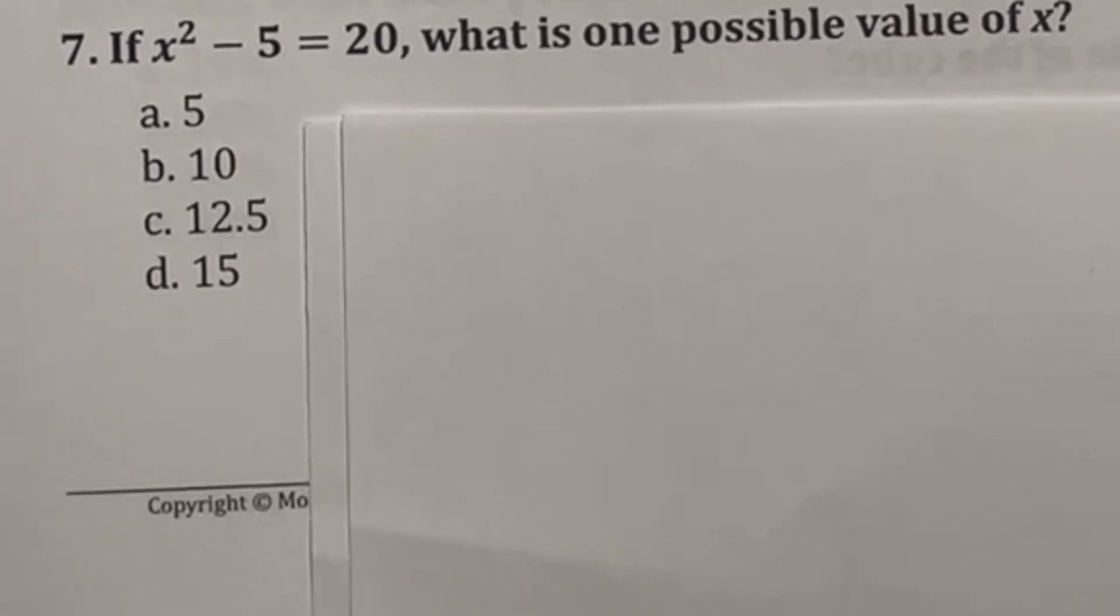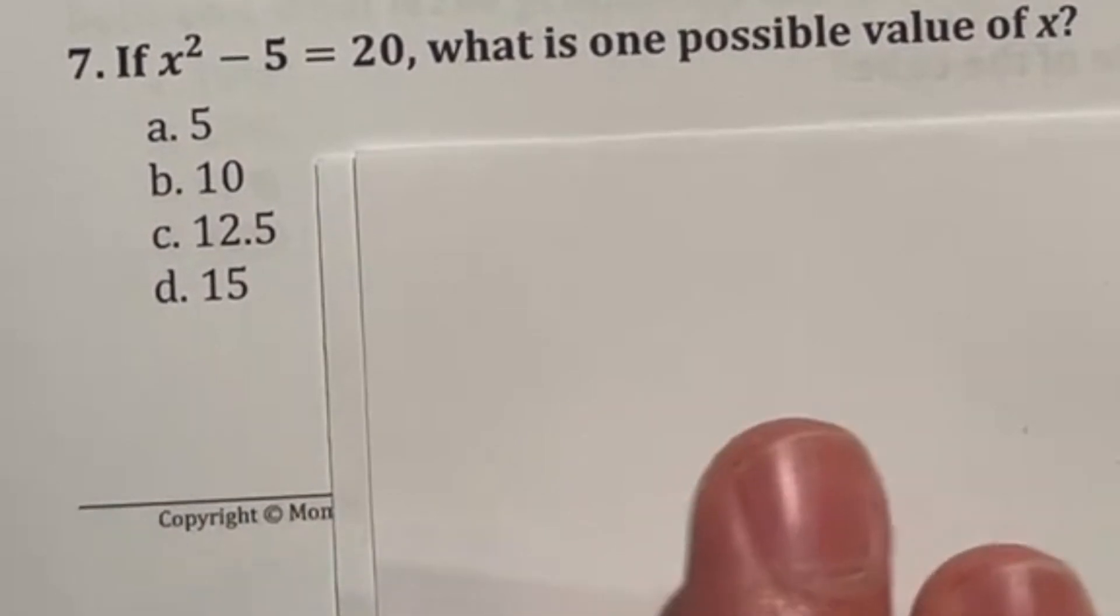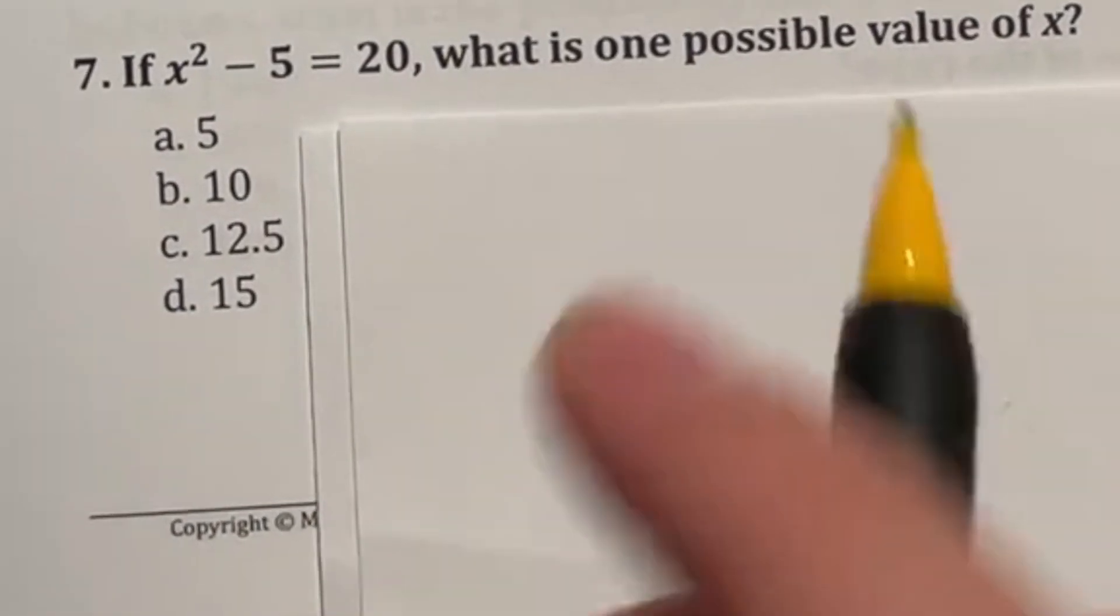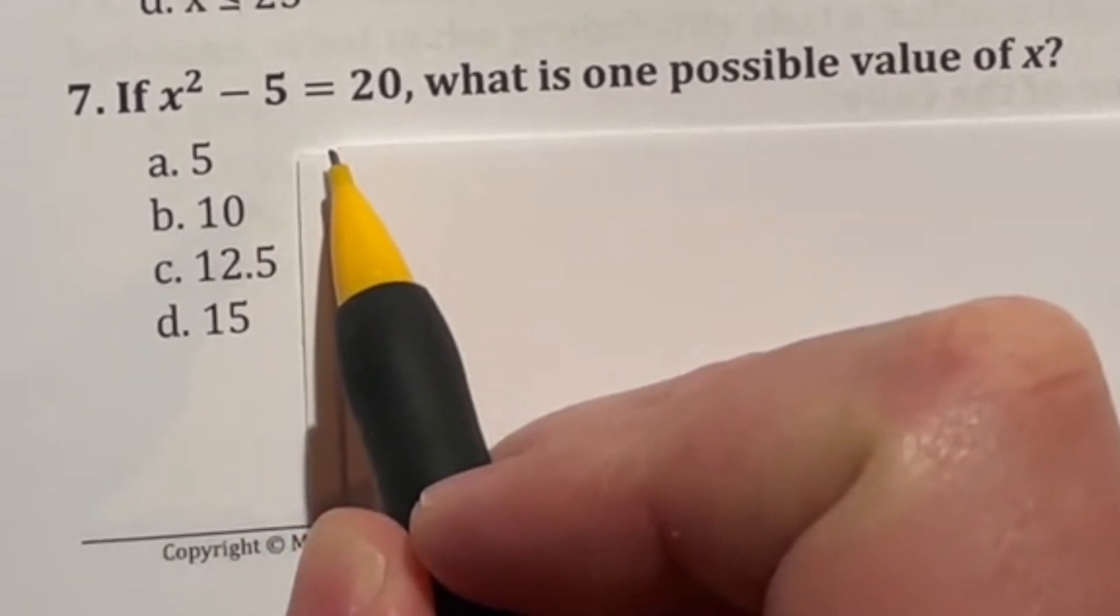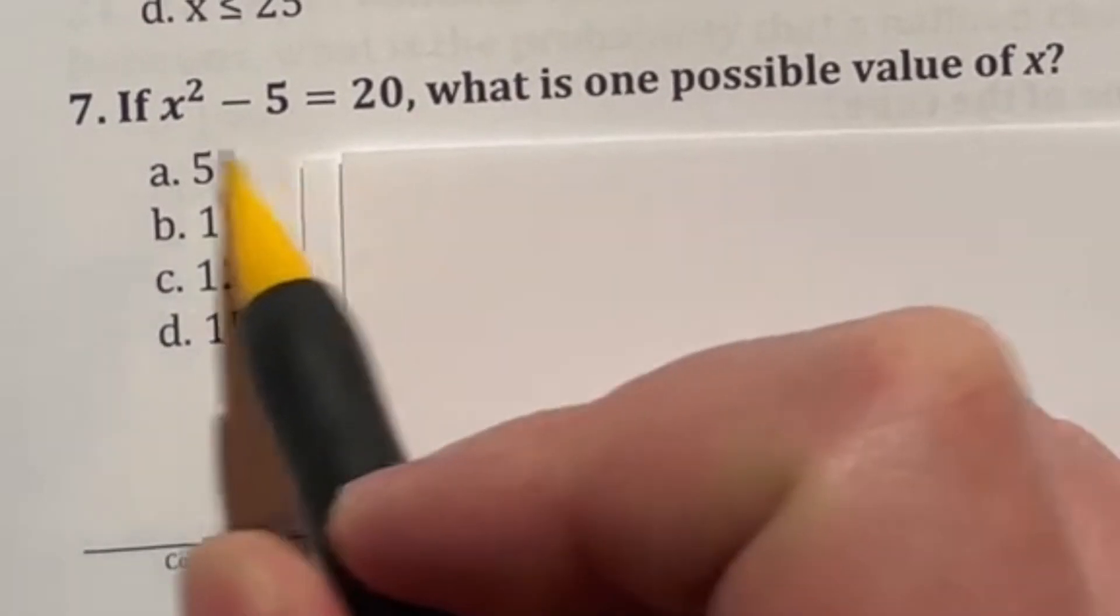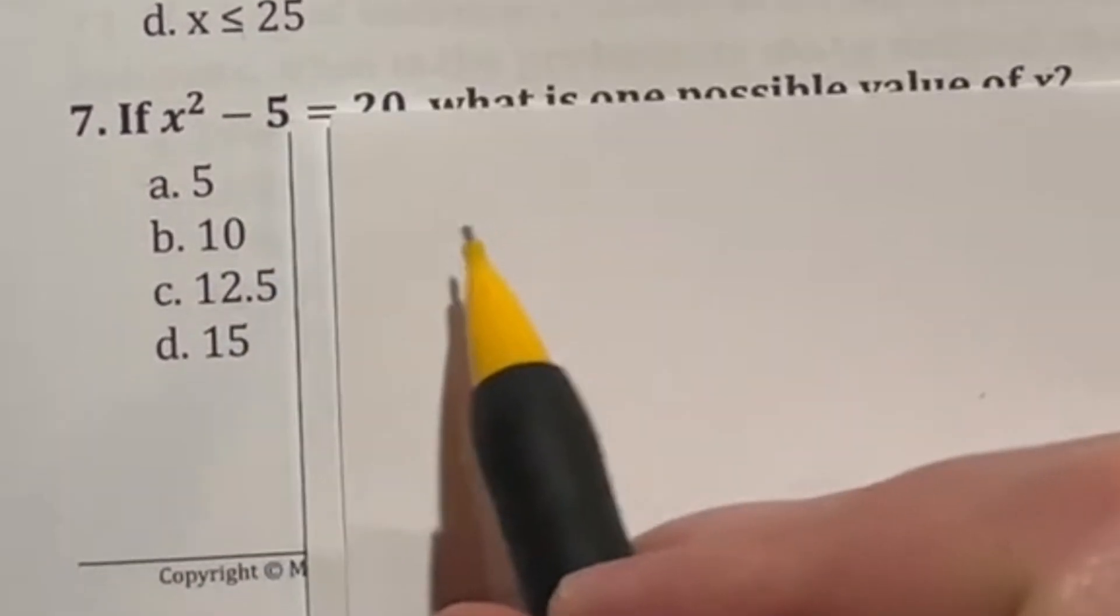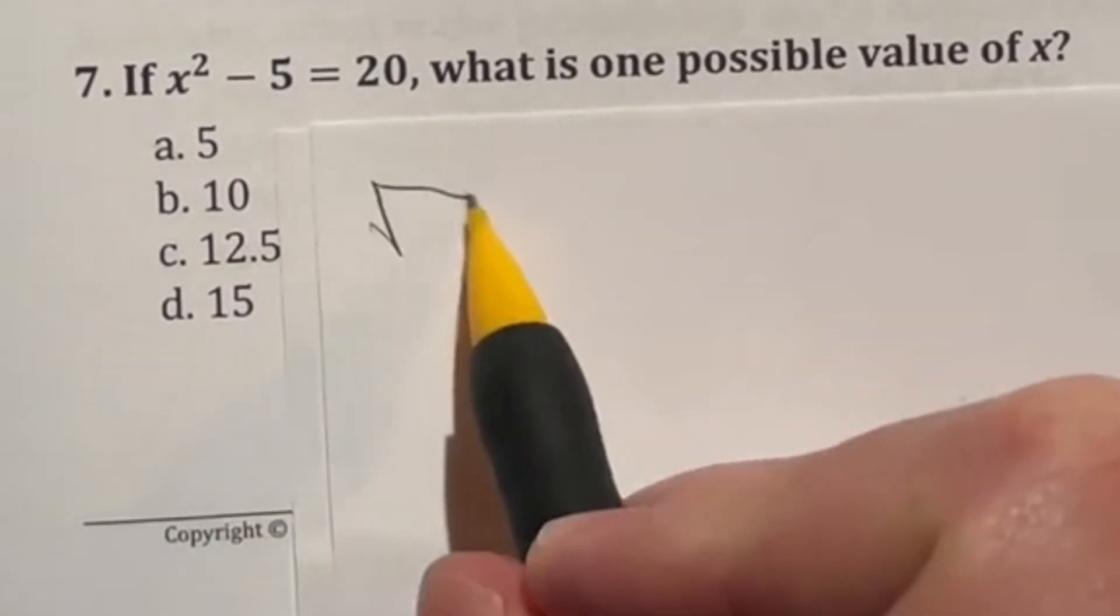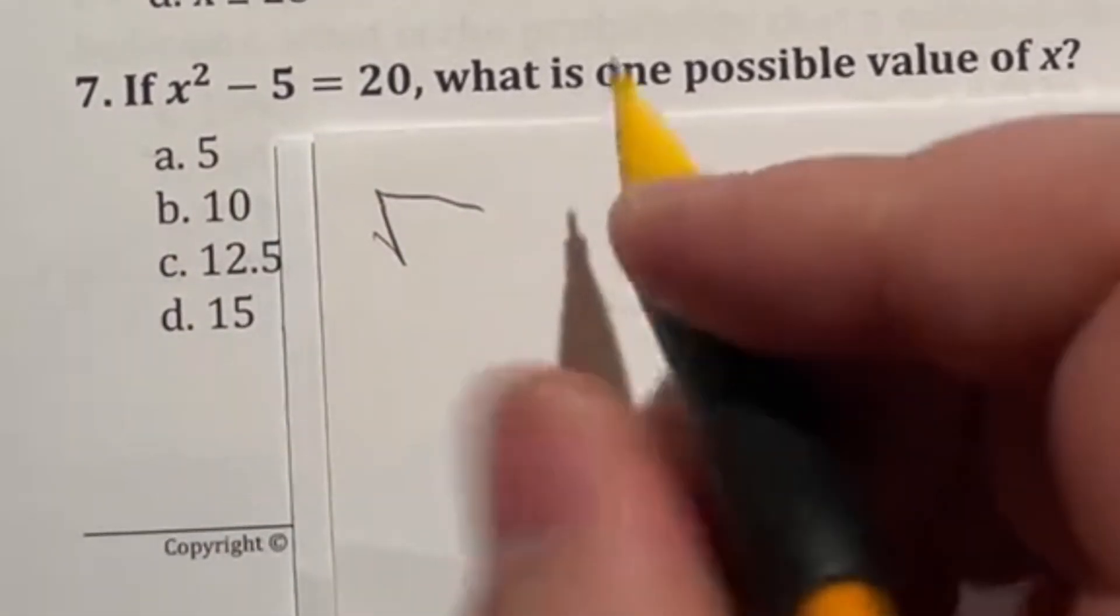So let's talk about number seven. It says here x squared minus five is equal to 20. So how are we going to go about solving this? Well, just like before, the opposite of subtraction is adding, opposite of multiplying is dividing, and vice versa. But what about the opposite of x squared? Well, the opposite of squaring something is what we call square rooting something, which is just the opposite function. So let's talk a little bit more about that as we do this question. So first off, if we want to do the opposite, we got to get this term by itself first.